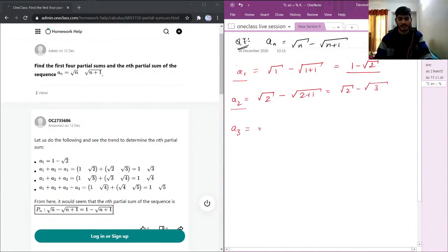Then we have a3, which will be square root of 3 minus square root of 3 plus 1. Let's just keep this in square root form only. This will be square root of 3 minus square root of 4.